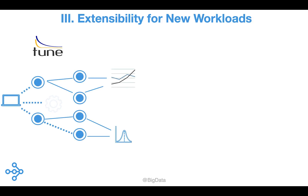Third, modern AI applications are notoriously compute-hungry. You don't train a model just once — finding the best model often requires searching among various hyperparameter settings. This process is called hyperparameter tuning, and it can be very expensive. One of the more popular tools in this area is Tune, a scalable hyperparameter tuning library built on top of Ray. Tune runs on a single node or on a cluster, and has quickly become one of the most widely used libraries in the Ray ecosystem.